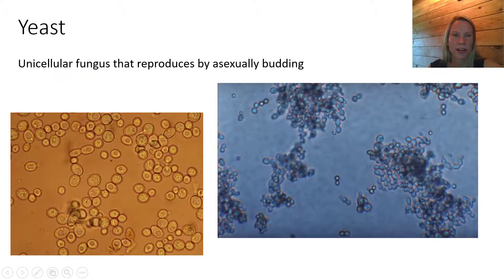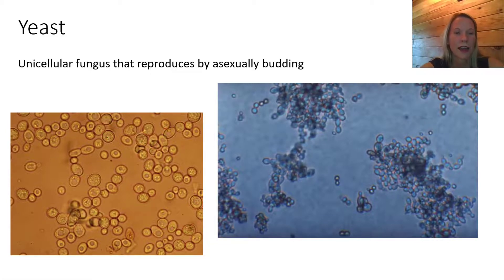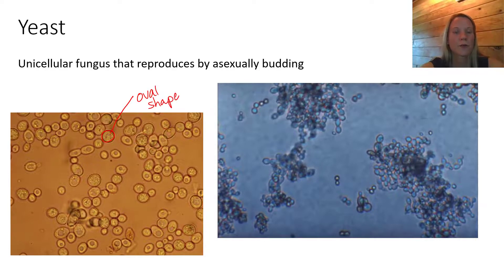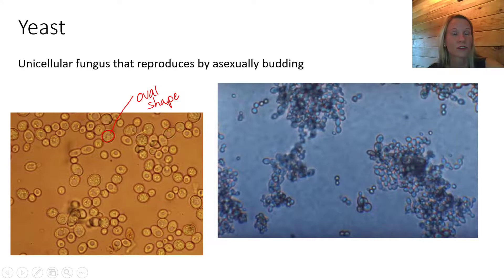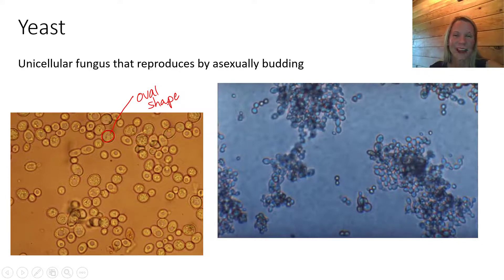On to the third type of fungus: yeast. Yeast stands out because it's the only type of fungus that is unicellular - a single-celled fungus with sort of an oval shape. Under the microscope, you need a microscope to see the cellular structure of yeast. Yeast are significant to the food and beverage industry because of the fermentation process - they can take sugar and turn it into alcohol.